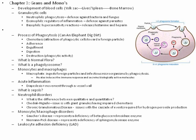Monocyte macrophage disorders: Gaucher's disease has a deficiency of beta-glucocerebrosidase — remember the G's: Gaucher's and glucocerebrosidase. Niemann-Pick disease is easy to memorize. Leukocyte adhesion disease — just as it sounds, the cells aren't as sticky as they should be, so they don't adhere and destroy infections like they should.